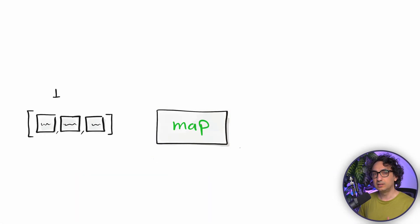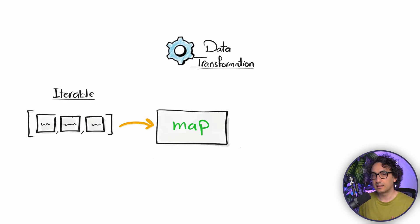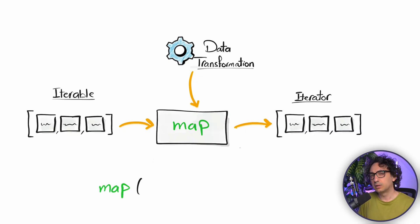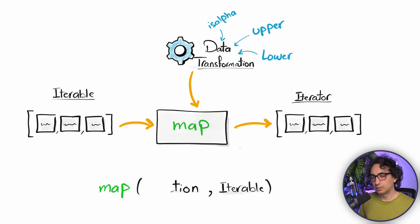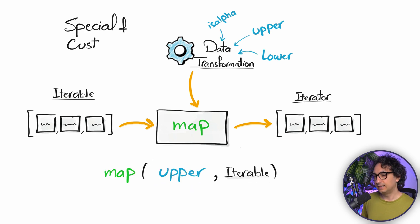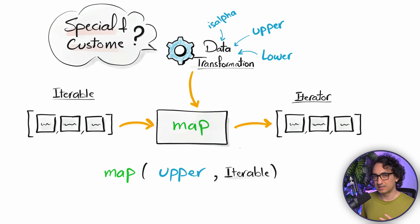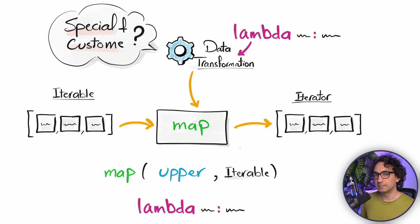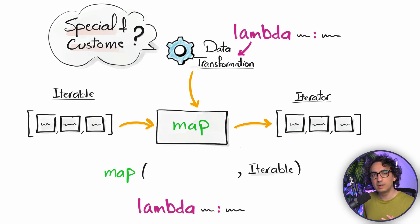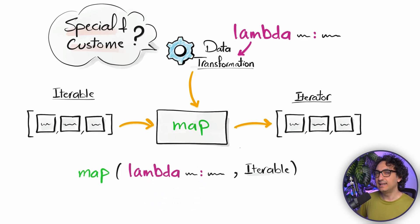Now with this, you have the basic understanding of how Lambda works. For the map function, you need two things: first, how to transform your data — the function — and second, your data like the list. We said we could use built-in functions and methods from Python like upper, lower, or isalpha. But if you need to do something specific — some extra complex logic — we can't use the built-in stuff. We can use Lambda to specify exactly what we want to do.